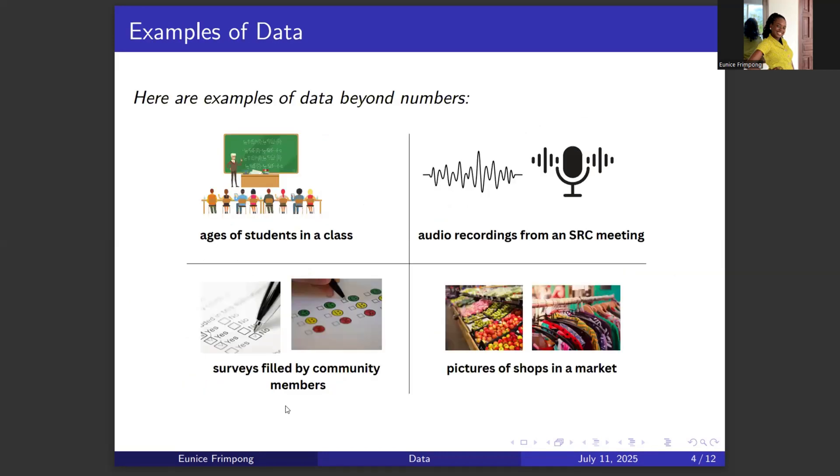Here are some examples of data that goes beyond numbers. In the first chart here, we can see these are students, and this data here is the ages of students in a class. This is also audio recordings from an SRC meeting. You can see that this particular data set is not a number. It is data, but it is not numbers. It is audio recordings of some meetings that have gone on, but it is also data. We also have data where we have surveys that have been filled by some people. And another kind of data can be pictures. Pictures of some shops in the market can also be some form of data. So you can see that in all of these four types of data, this is the only one that is numerical, the ages of students in a class. So data goes beyond numbers.